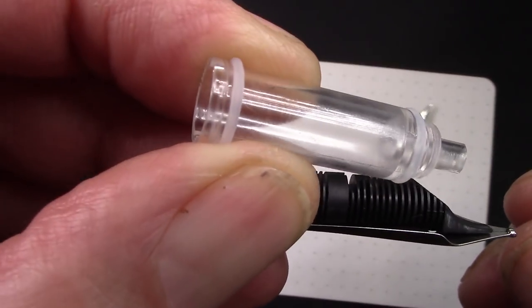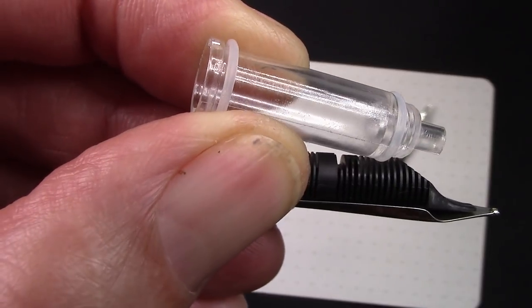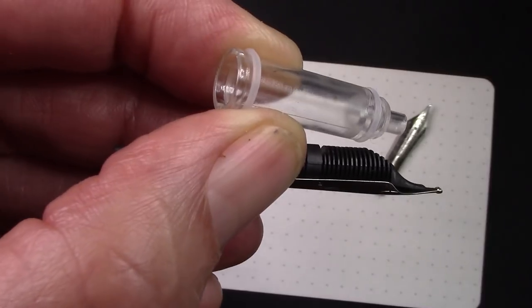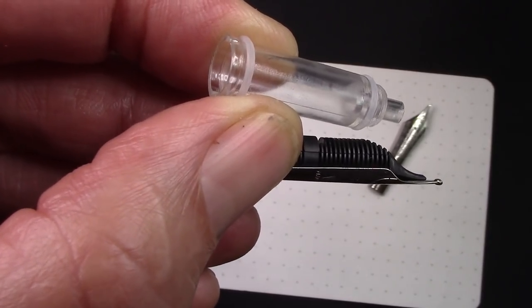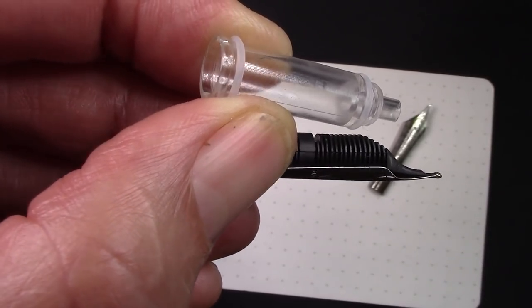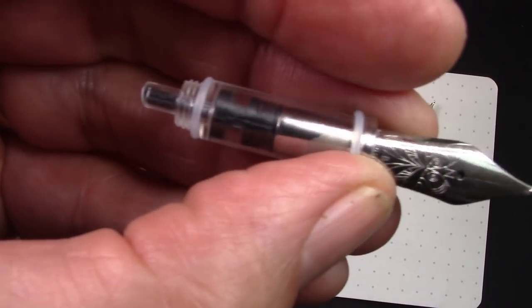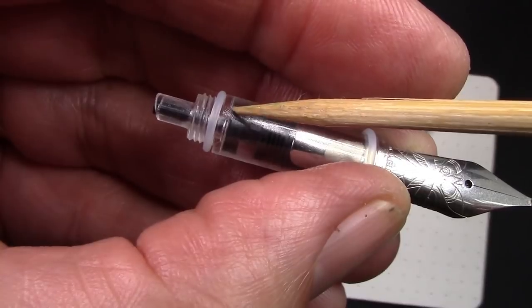You have to put the o-rings on it, but we're just going to unscrew the PenBBS nib from the 456 and I'm going to screw in the broad Nemosine first. When you put the nib in, the key thing is that this whole nib assembly seats well against the top of this collar.